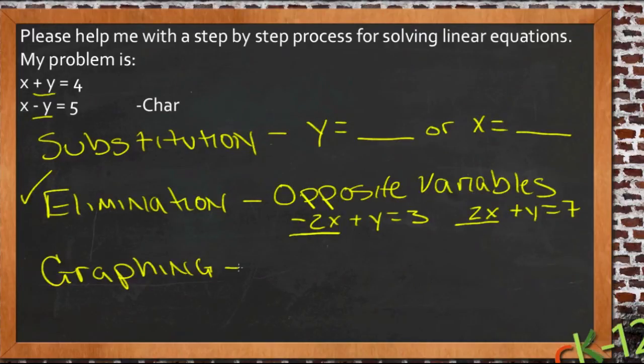Now for graphing, the easiest way to graph is the slope-intercept form. So if you have y equals mx plus b, you already have one point right away. You know the y-intercept and you already know the slope m. So that makes graphing that really easy.